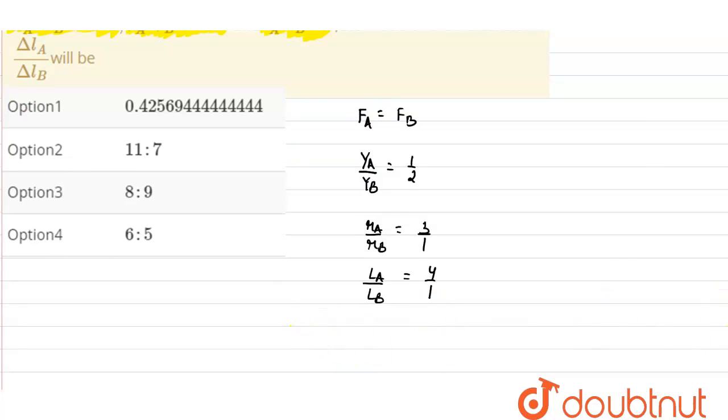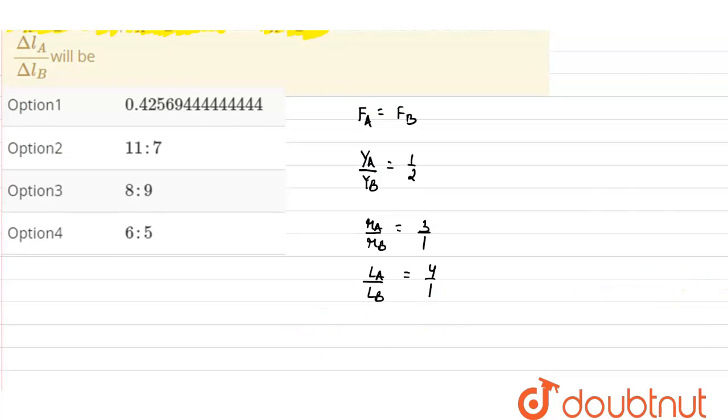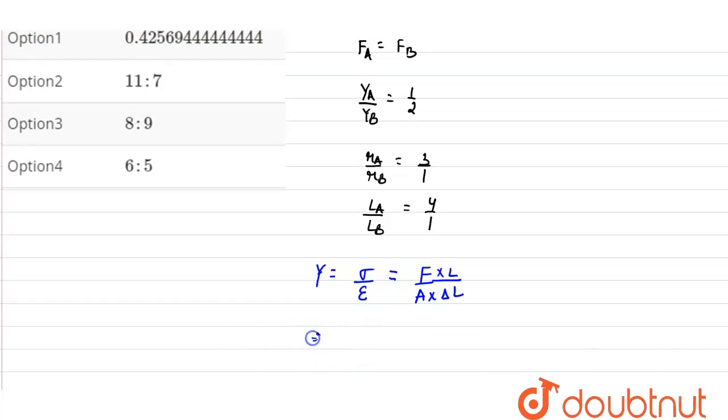We have to find the ratio of the elongation of the material A to material B. First of all, let us find the equation for the elongation. Now as we know, the Young's modulus is given as stress upon strain. Stress is force upon area and strain is change in length upon original length.